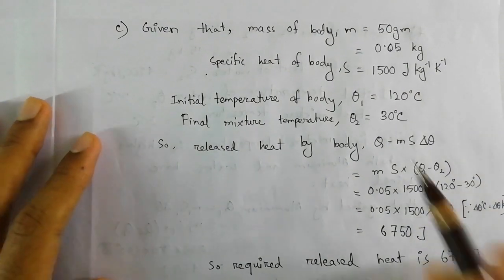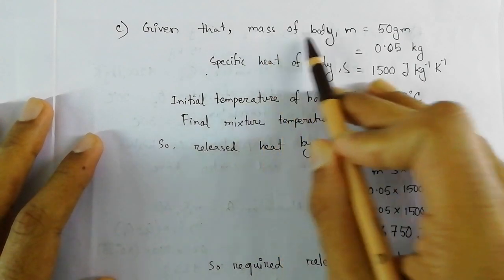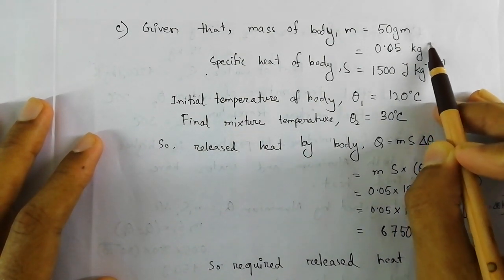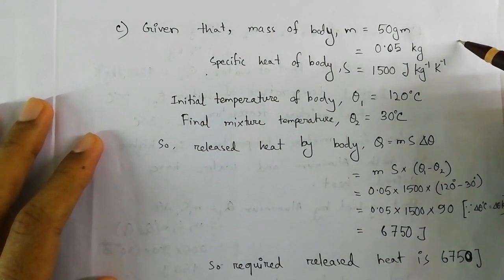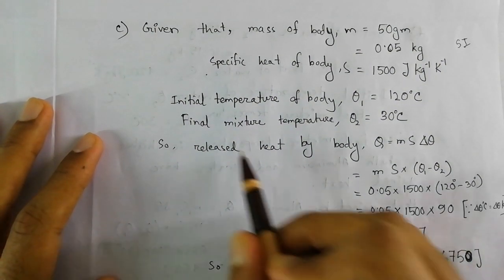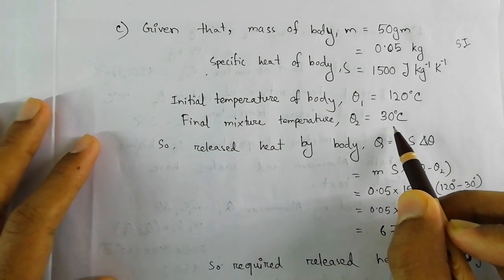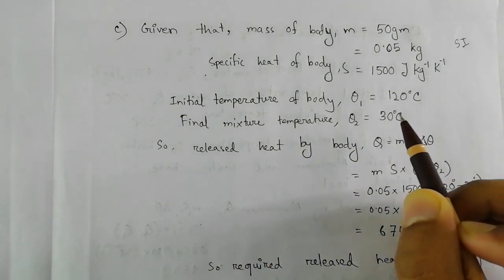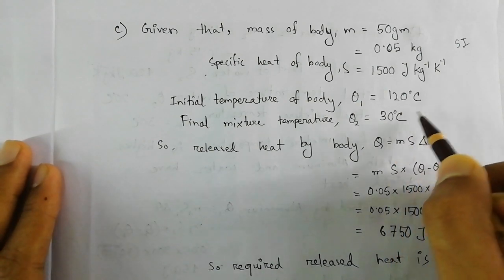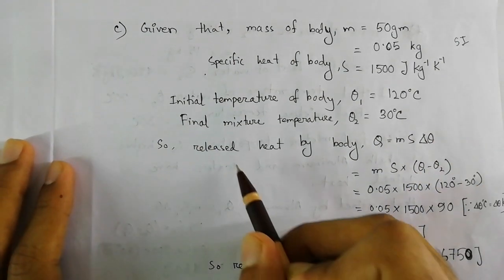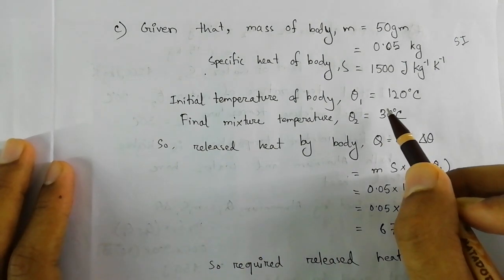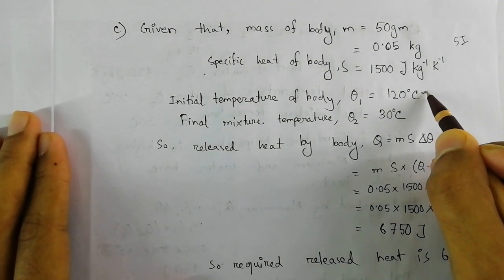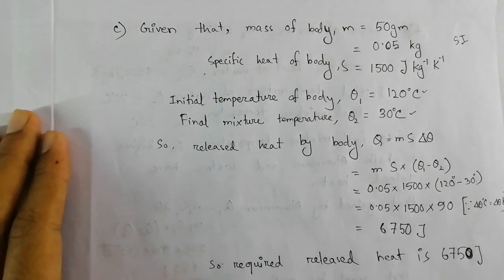We prepared the answer by first listing all the given data: the mass of the body and its specific heat, converting mass into kilograms for SI units. The initial temperature of the body is given, and the mixture temperature is 30 degrees Celsius — so all substances in contact reach 30 degrees Celsius as the final temperature. Since the final temperature is less than the initial temperature of 120 degrees Celsius, the body has lost heat.